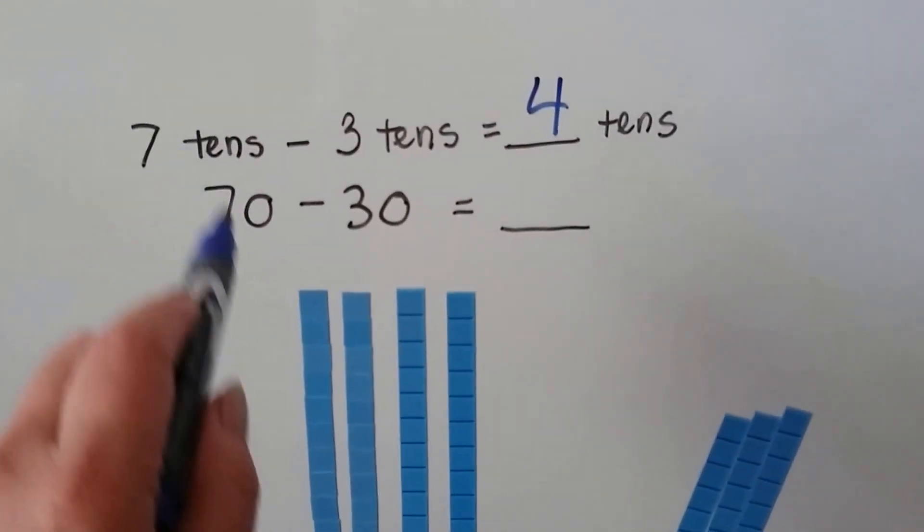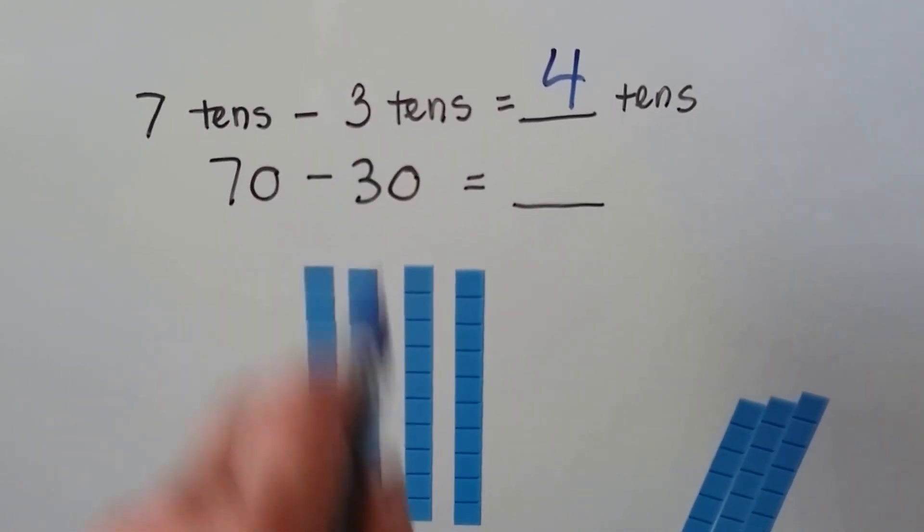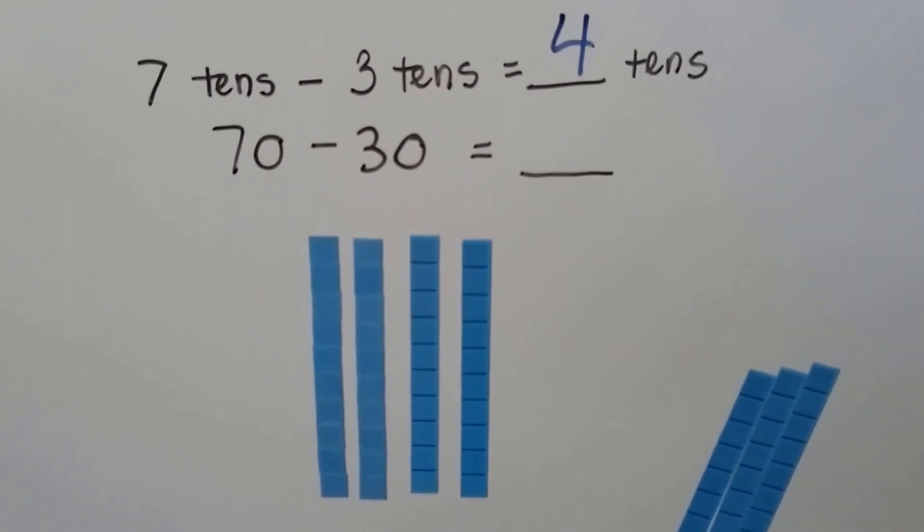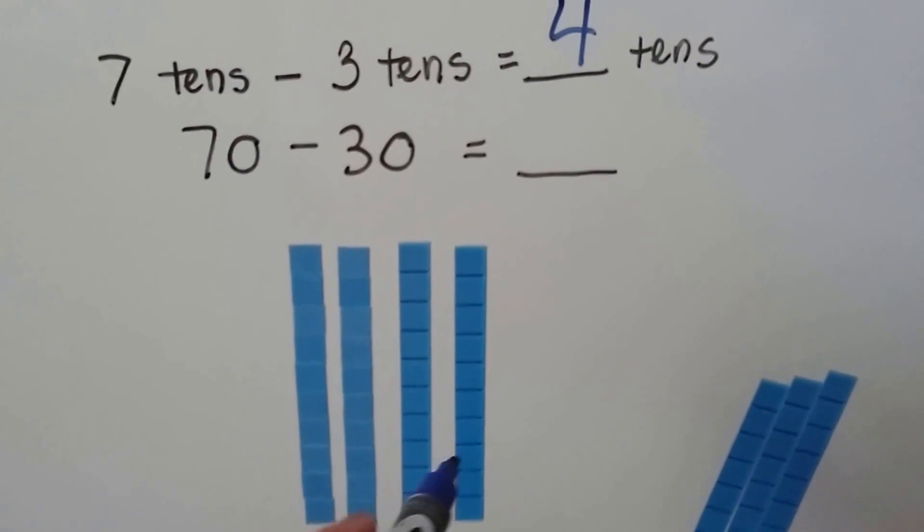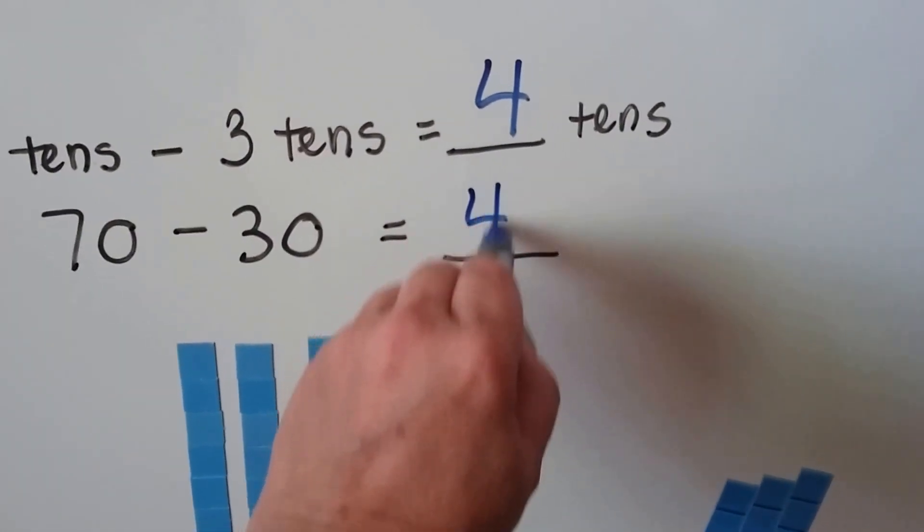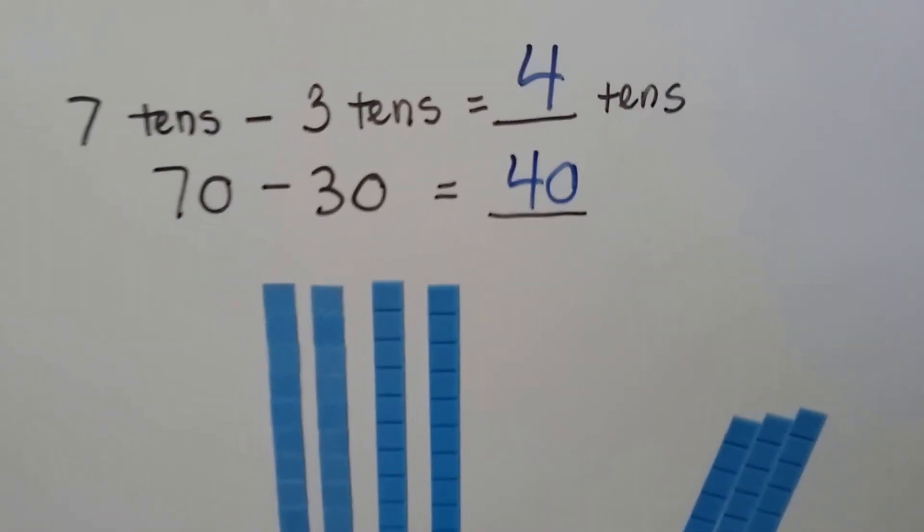Seventy, that's seven tens minus thirty, that's three tens, equals four tens, which is forty. Wasn't that easy?